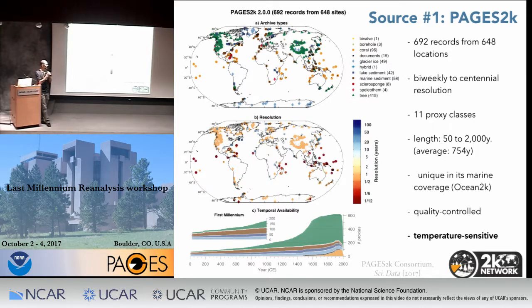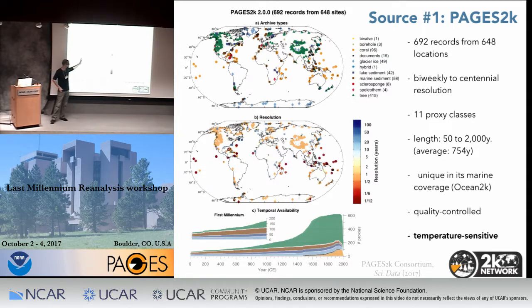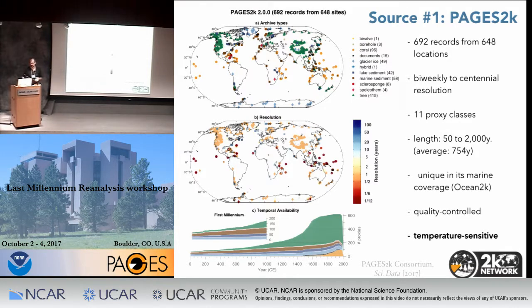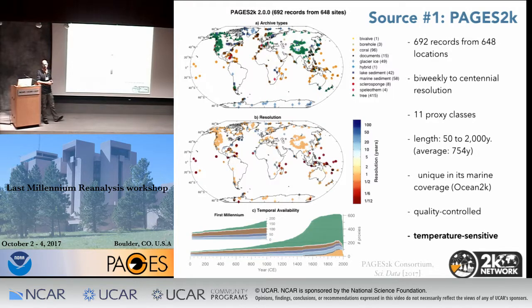Greg alluded to the fact that in principle we could blend in different multi-resolution proxies. That's definitely a new frontier — using high-resolution proxies to constrain high frequencies and low-resolution proxies to constrain low frequencies. But there's a lot of calibration, or at least proxy system modeling, that needs to take place to do that properly. That's definitely where we're going.